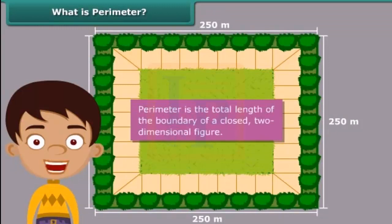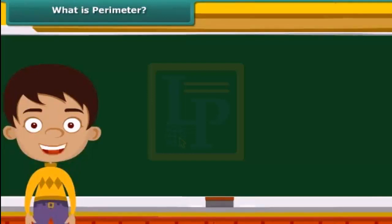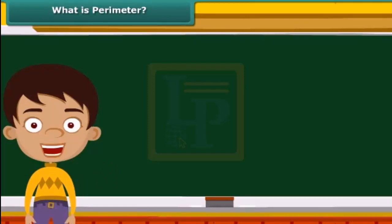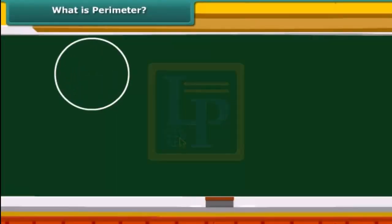Perimeter is the total length of the boundary of a closed two-dimensional figure. Here is a simple technique of measuring the perimeter of a shape: take a closed geometric shape, such as a circle, square, triangle, or rectangle, made of string.